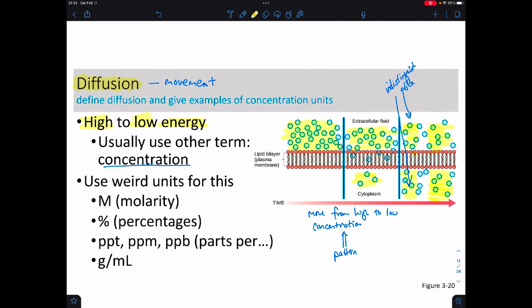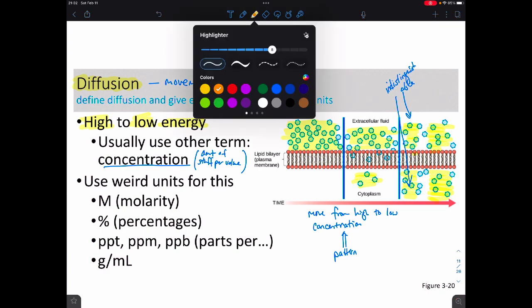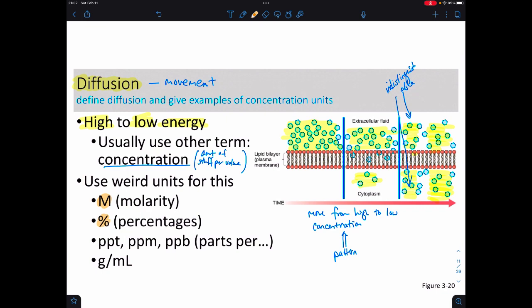When we deal with concentration, there are units that we use, because concentration is the amount of stuff per volume. So we can view this in terms of density, which is mass per volume, or it could be other things like counts per volume. So if you've taken a chemistry class, you've heard of some of these terms before, like molarity, or percentages, or parts per thousand, or parts per million, or parts per billion. Or we could do it in terms of density of grams per milliliter. So these are all just things that we can use.